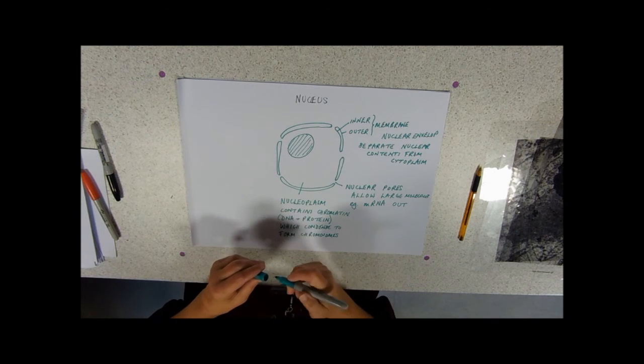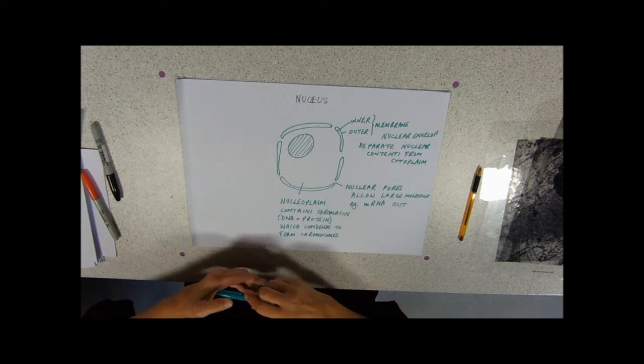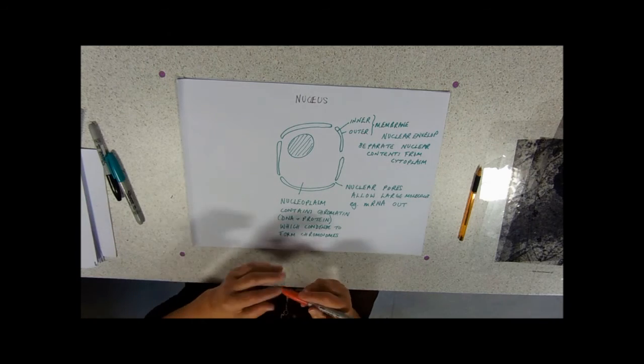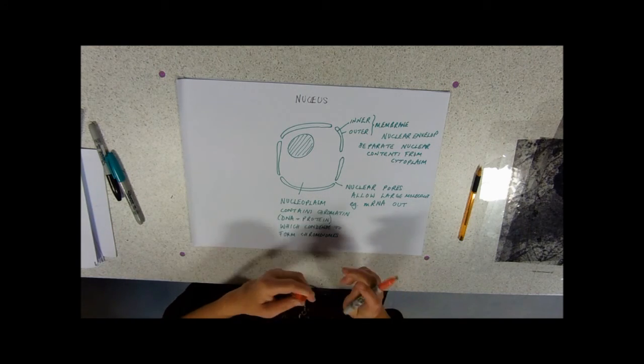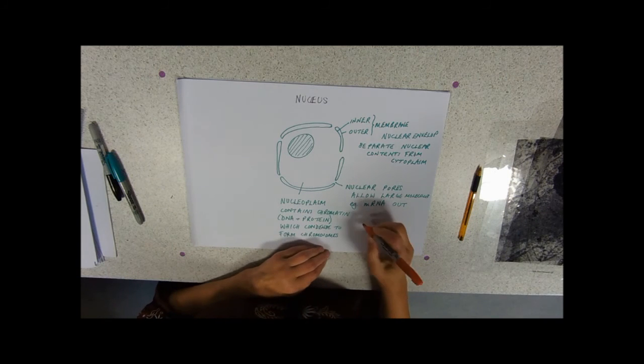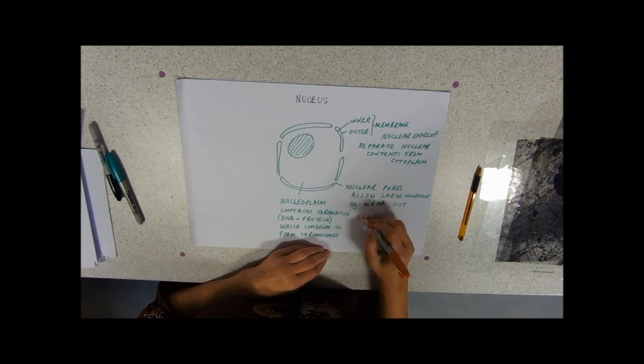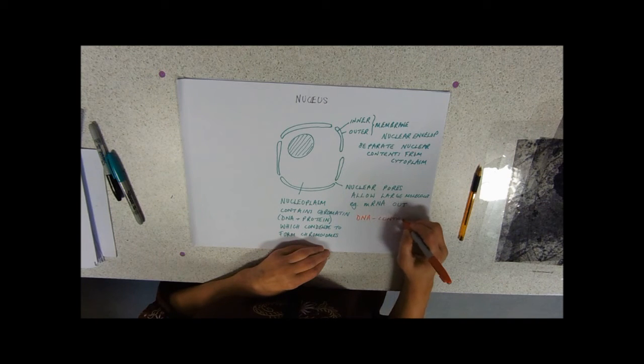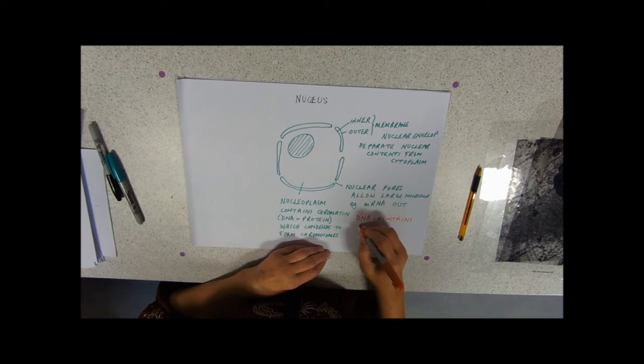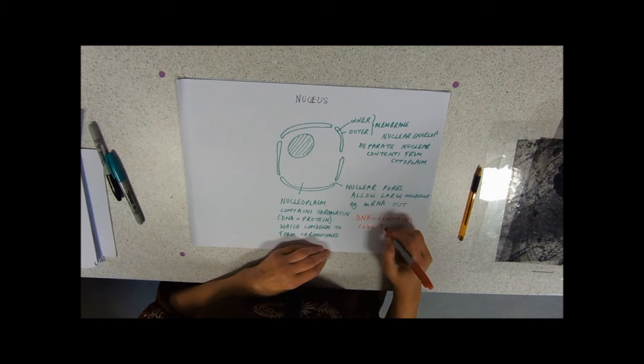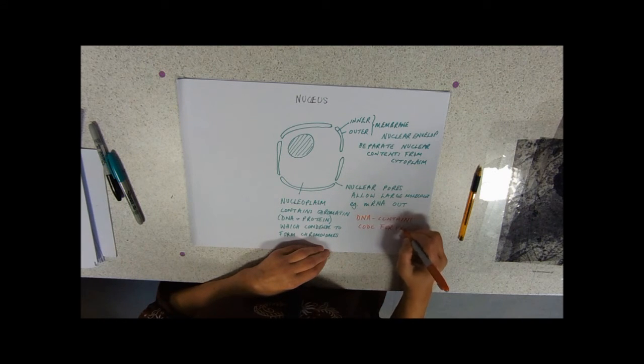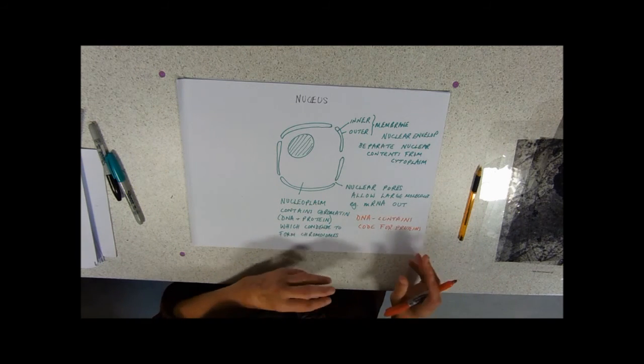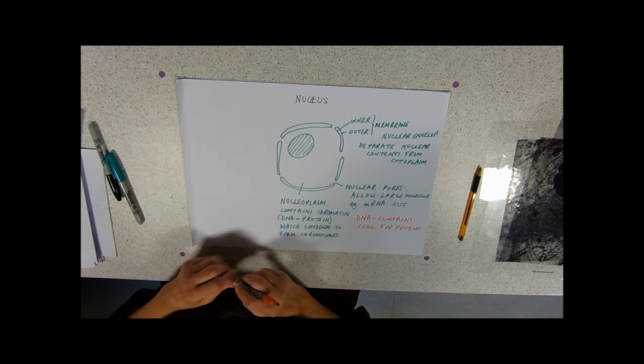Now at school when you did GCSE you'll have talked about the nucleus as being the brain of the cell or controlling cell activities. Now we're going to have a brief look at how it manages to do that. So the DNA component contains the code for proteins. So how the nucleus controls the cell is by controlling the manufacture of proteins like enzymes and hormones.